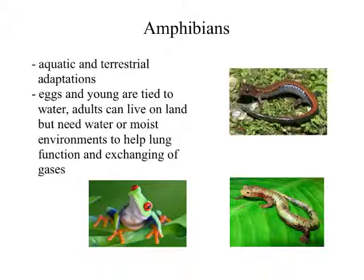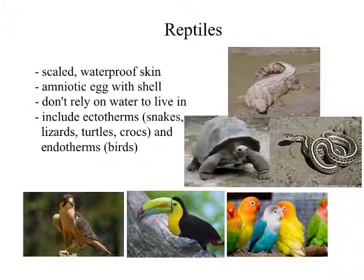Fish are strictly aquatic, but amphibians are tied to both land and water — they have both aquatic and terrestrial adaptations. Their eggs and larvae are tied to the water, while the adults have adaptations that help them survive on land. However, they still need a moist environment to help with lung function and gas exchange, because although they have lungs, they also get efficient gas exchange through their moist, porous skin.